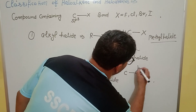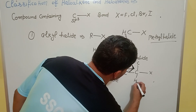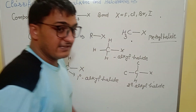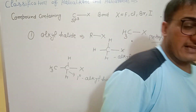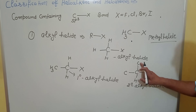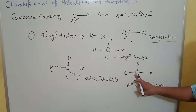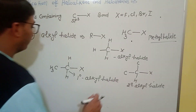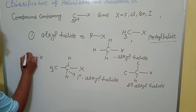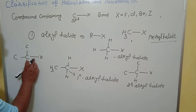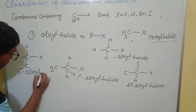When the carbon bearing the halogen is directly attached to two carbons and one hydrogen, it is called a secondary alkyl halide. When the carbon attached to the halogen is directly attached to three carbons, that carbon is a tertiary carbon and the compound is called a tertiary alkyl halide.